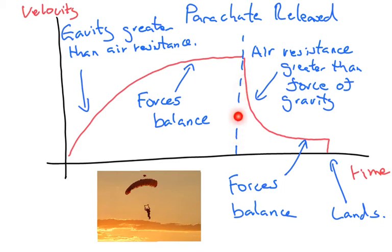He releases the parachute here and the air resistance becomes much greater than the force of gravity, so that slows him down. He then reaches a new terminal velocity here where the force on the parachute is equal to the force of gravity and then eventually lands.